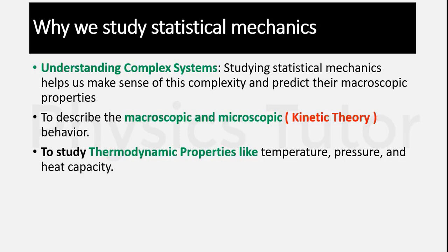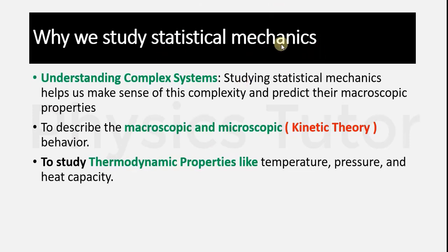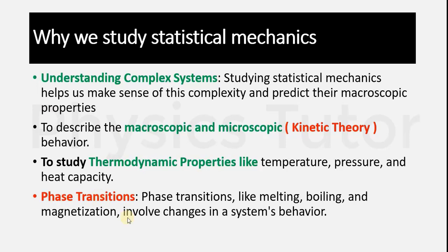To study parameters like temperature, pressure, and heat capacity, we study statistical mechanics. It also tells us about phase transitions. Phase transitions include melting point, boiling point, and magnetization — all involving changes in a system's behavior depending on temperature, pressure, and heat capacity. Melting and boiling points depend on temperature. We also study magnetization and demagnetization based on temperature, including what happens to ferromagnetic substances when temperature increases.